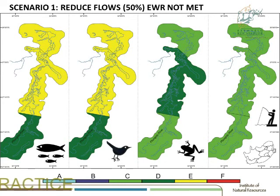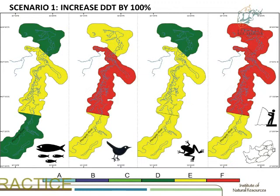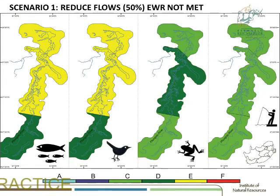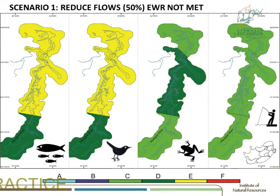What if we reduce the flows by 50%? What's the impact of not achieving your Environmental Water Requirements from Jozini? The fish get hammered, the birds get hammered, the frogs start complaining, but the people are okay. This is the value — alternative scenarios trying to get an idea of the implications. It's all based on the data we have, with uncertainty associated, but the process allows you to address the uncertainty, adapt the model, and reduce it through time and monitoring.